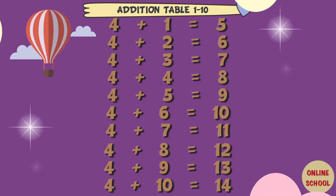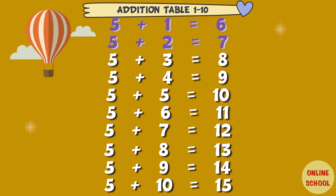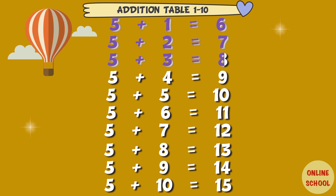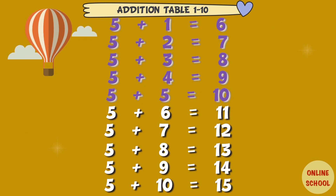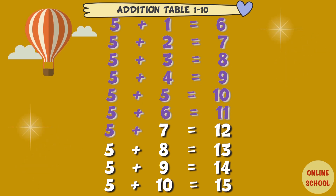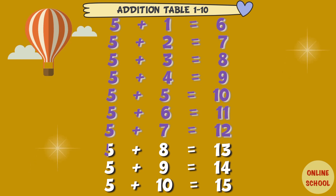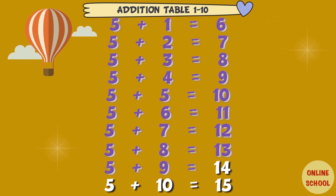4 plus 10 equal 14. Table 5: 5 plus 1 equal 6, 5 plus 2 equal 7, 5 plus 3 equal 8, 5 plus 4 equal 9, 5 plus 5 equal 10, 5 plus 6 equal 11, 5 plus 7 equal 12, 5 plus 8 equal 13, 5 plus 9 equal 14, 5 plus 10 equal 15.